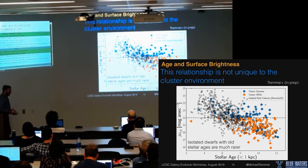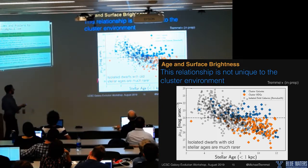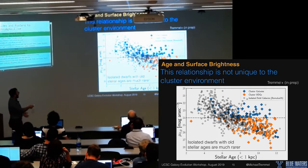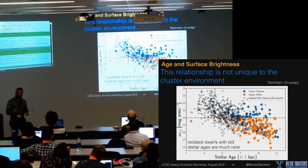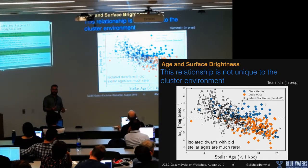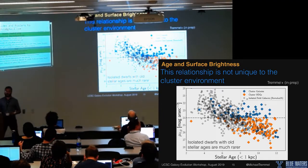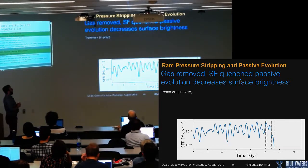This relationship between lower star formation and central surface brightness is true everywhere, not just in the cluster. Plotting central surface brightness as a function of stellar age within the inner one kiloparsec, as you go to older populations — whether in the field or in the cluster — you get lower central surface brightness. The difference is that unlike the field, the cluster is really good at quenching dwarfs.